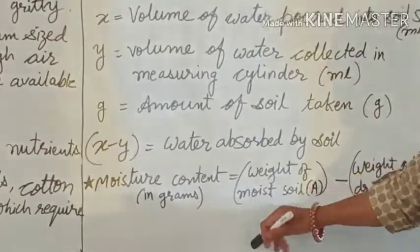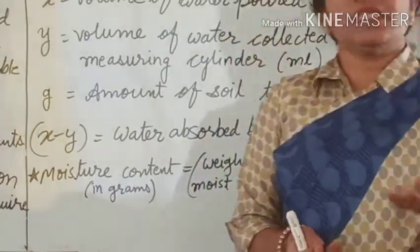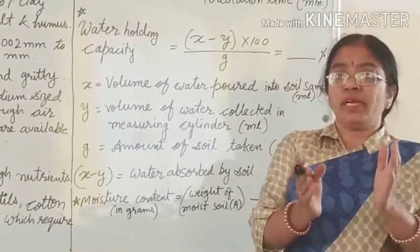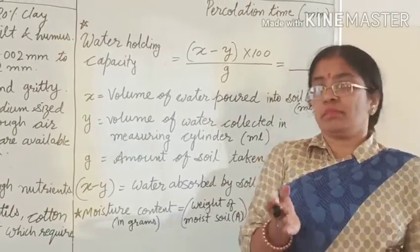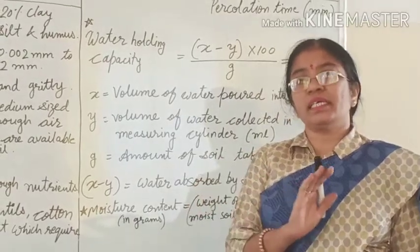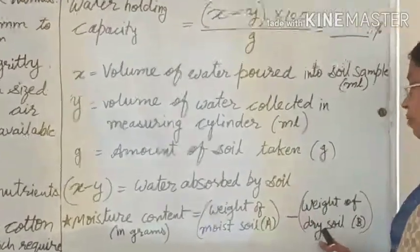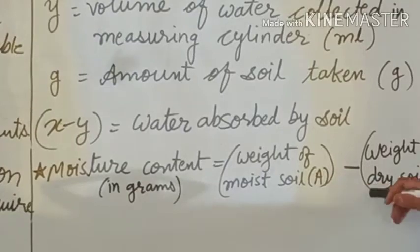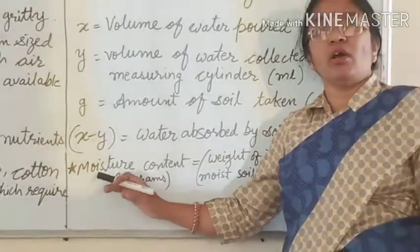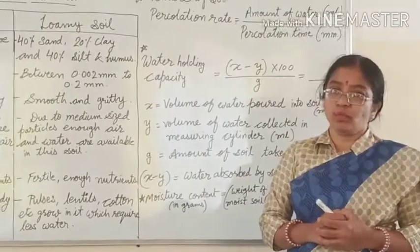Now, moisture content of any type of soil — how much moisture it holds. For this, we take some soil, add water to make it moist, then weigh this moist soil in grams. After that, we dry the soil completely and weigh it again in grams. The difference between the weight of moist soil and the weight of dry soil is called the moisture content of the soil — meaning the maximum amount of moisture that type of soil can hold. Thank you.